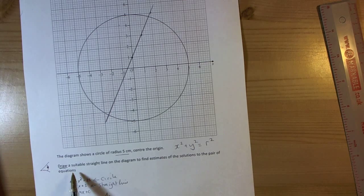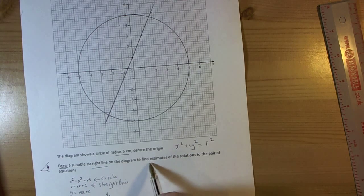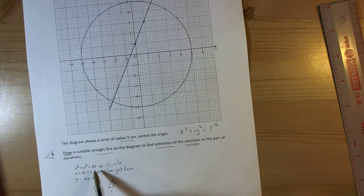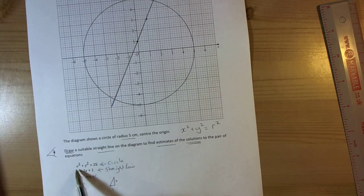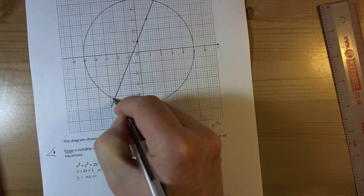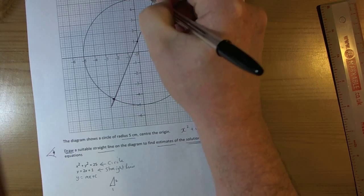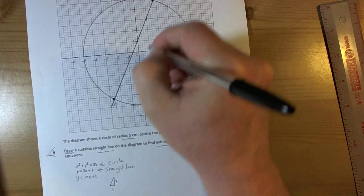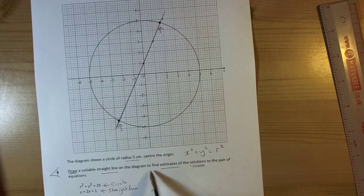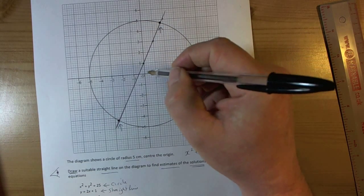So, the question says draw a suitable line, I've done that. It says find estimates of the solutions to the pair of equations. Well, this is a simultaneous equation of two variables, two equations. So the answers will be where the line crosses the circle. So it's these two intersection points that I need. So I need the coordinates of those two to allow me to get the estimates of the solution.